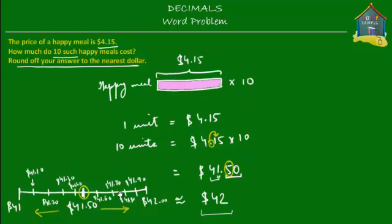So obviously, all these over here, $41.60, $70, $80, $90, $95, $96, all these will be rounded up to $42. But this is the midpoint, and the midpoint always is rounded up. The midpoint, which is $41.50, is at the same distance from $41 as well as $42, but we always round it up to $42.